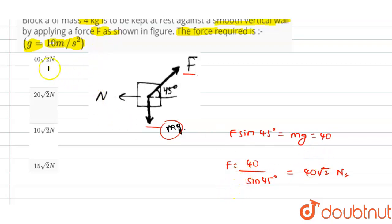So this is the value of the force that we have got. Out of the four options, if you see, we have option A as 40 root 2 newtons, so option A is the correct answer for this question.